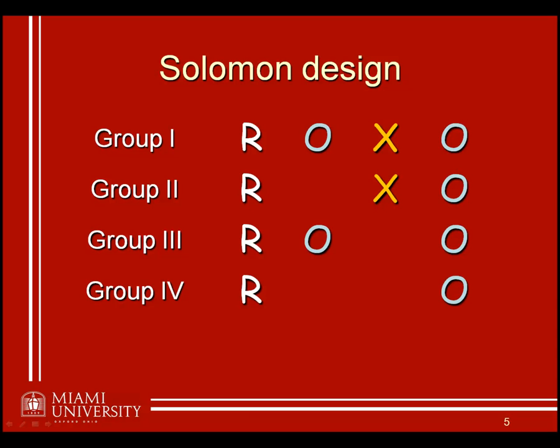The interaction effect here would be exactly what we referred to before as pretest sensitization — that is, the effect of the treatment depends on whether or not the individuals had the pretest. The Solomon four-group design is the only way to determine whether or not that pretest sensitization is occurring, which is the same as saying that a factorial design is the only way to determine whether or not this interaction effect is occurring.